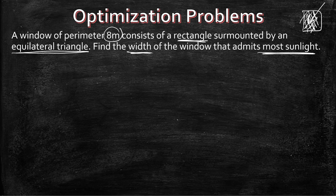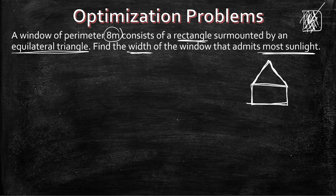In this case we have a rectangle surmounted by an equilateral triangle. Let's put some labels on our image. We have x for the bottom of the rectangle, and of course that's also the bottom of the triangle. It's an equilateral triangle, which means that every side is the same dimension. And then you have the sides of your rectangle, so that would be y.